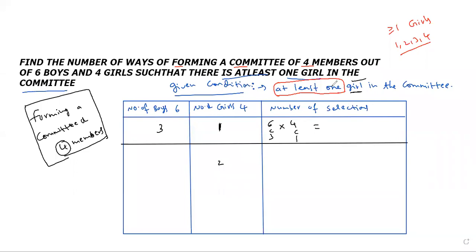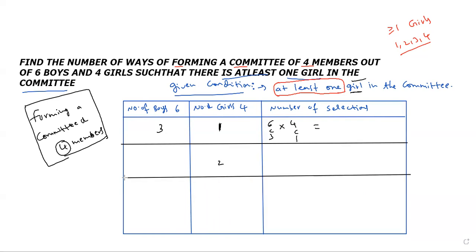Since the condition is 'at least one,' we start with girls first. One girl must be selected. After that, the remaining three in the committee are selected from boys — that is 6C3. Then one girl selected from four girls is 4C1. Next, for two girls: two selected from four is 4C2.